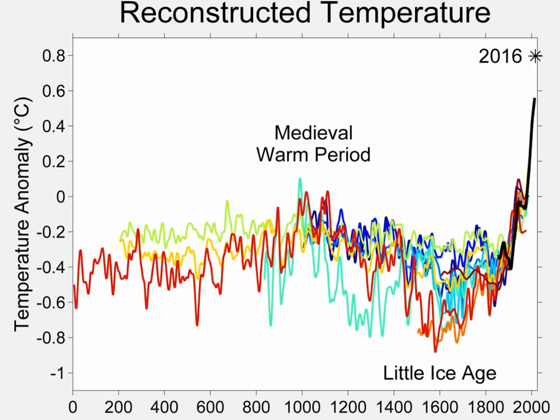Thus current evidence does not support globally synchronous periods of anomalous cold or warmth over this interval, and the conventional terms of 'Little Ice Age' and 'Medieval Warm Period' appear to have limited utility in describing trends in hemispheric or global mean temperature changes in past centuries.